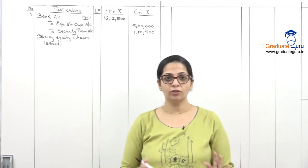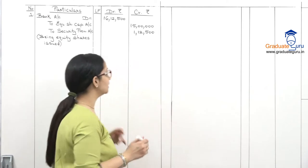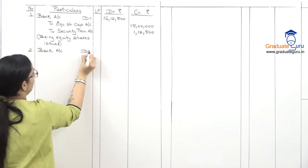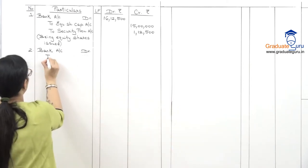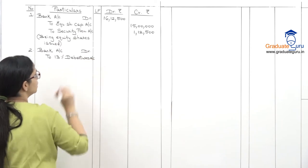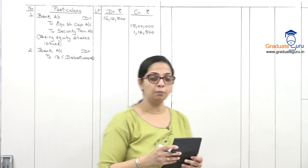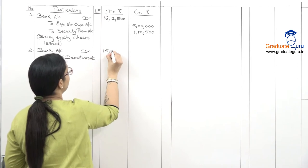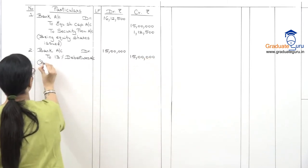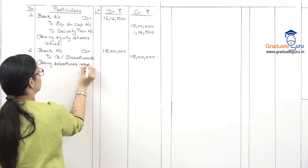Entry 2 is for the issue of 13% debentures: Bank Account Dr. to 13% Debentures Account. The entry is similar to the issue of shares but here we use the word debentures. We are issuing fifteen thousand debentures of rupees 100 each with no premium, so it is at par — total rupees 15 lakhs received on issue of debentures.